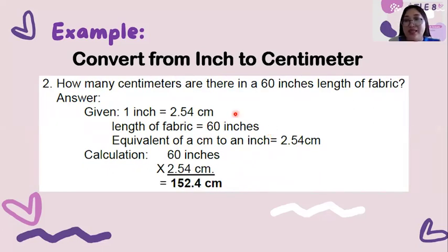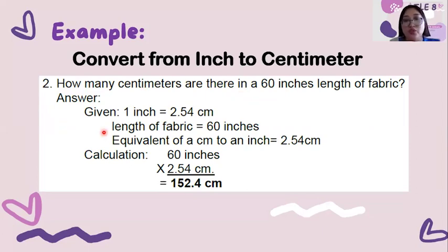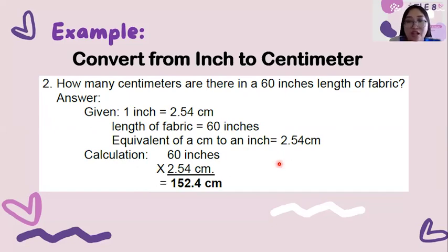Now let's calculate the inch to cm. How many cm are there in 60 inches length of fabric? Given: 1 inch is equal to 2.54 cm, and the length of the fabric is 60 inches. The equivalent of a cm to an inch is 2.54 cm. To calculate 60 inches to cm, we must multiply by 2.54 cm, and the answer is 152.4 cm.